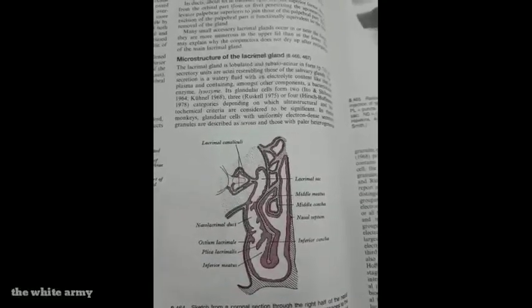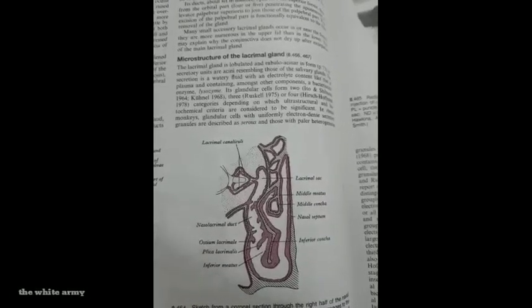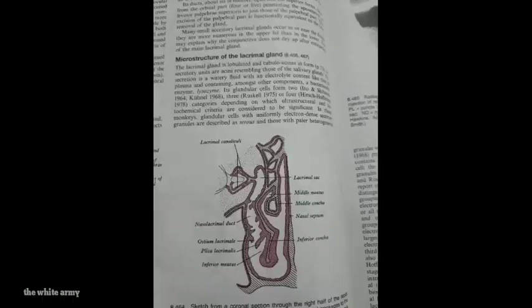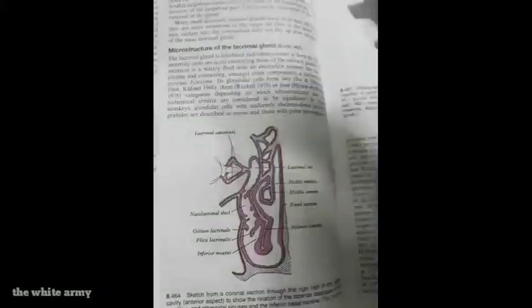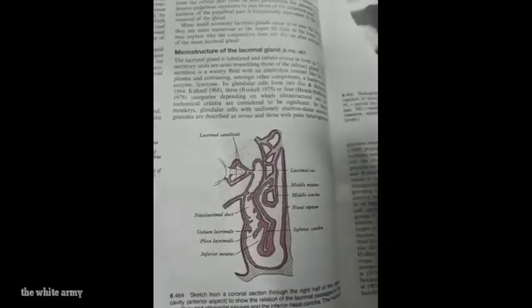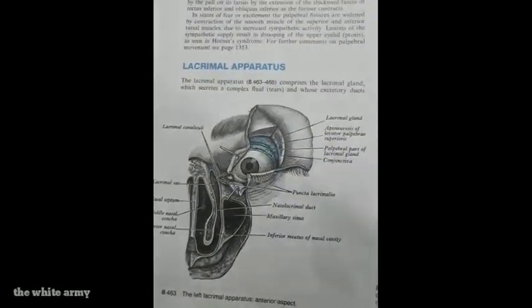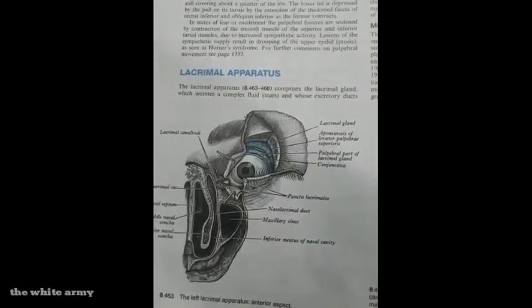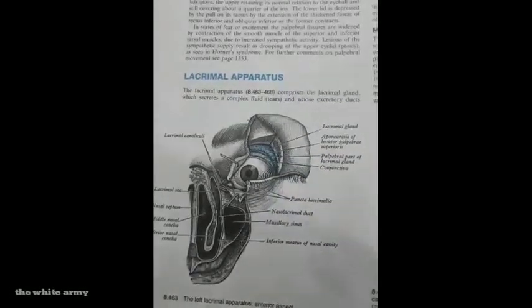The direction of the nasolacrimal duct is downward, laterally, and backward. Its surface anatomy corresponds to a line drawn from the inner canthus to the groove between the ala and the cheek. The bony lacrimal fossa surrounding the lacrimal sac is formed by the lacrimal bone and the frontal process of the maxilla, bounded by the anterior and posterior lacrimal crests, and covered by the lacrimal fascia — a condensation of periorbital tissue.